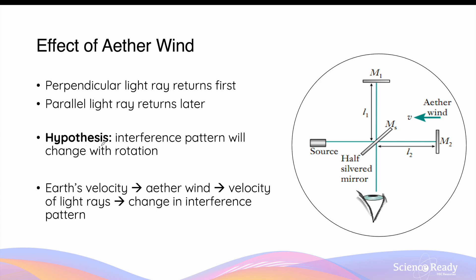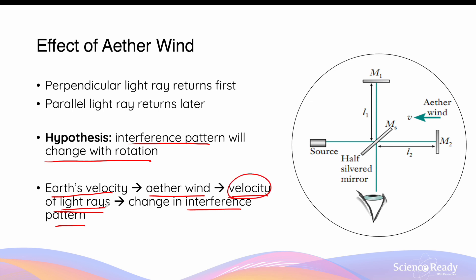The hypothesis made by Michelson and Morley was that the interference pattern they observed would change as the whole experimental apparatus was rotated on the pool of mercury. This is because Earth's velocity determines the direction of the ether wind, which in turn affects the velocity of the light rays, leading to a change in interference pattern with rotation. The different velocities of the two perpendicular light rays will result in an interference pattern, and as the apparatus is rotated, the effect of the ether wind on the velocity of the light rays will start to change, which results in a change in the interference pattern.